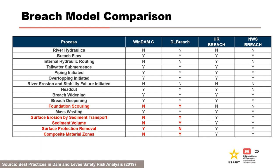This table from the best practices manual compares the various physically based breach models. On the far right is NWS Breach, which is a sediment transport model, free to download from rivermechanics.net. To the left of it is HR Breach from HR Wallingford, which can evaluate piping and zoned embankments, but unfortunately it is not free. As previously mentioned, Windam and DL Breach can simulate breaches due to internal erosion and piping. Since both are free to download, they are highlighted in the first two columns, with the differences between the two models appearing in blue font.